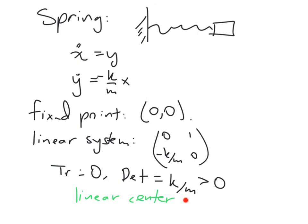The trace of this matrix is zero. The determinant is positive k/m. So we have a linear center—that's the type of fixed point it is.